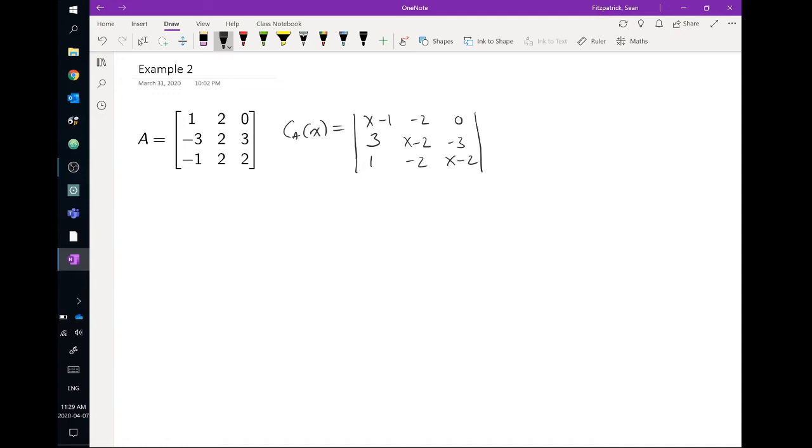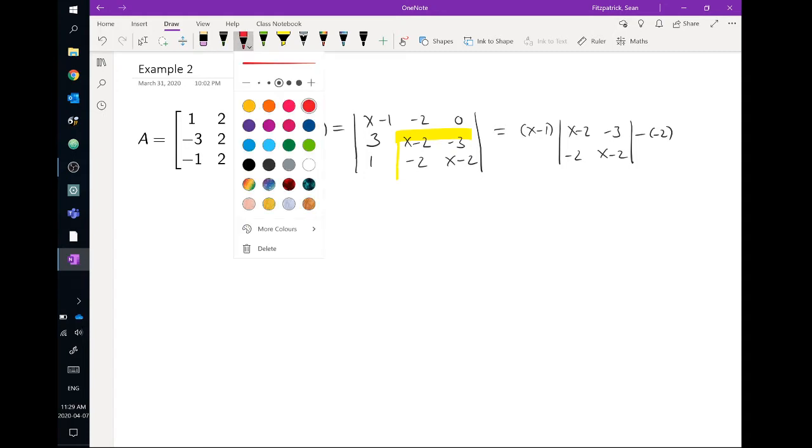Okay, so the next thing we want to do is we want to expand. Trying to use row operations to simplify usually doesn't get you very far because you've got those variables that you have to deal with and it's a bit of a pain. So what we'll do is we'll just expand along that first row because at least there's a 0. So x minus 1 times this 2 by 2 determinant: x minus 2, minus 3, minus 2, x minus 2, minus minus 2. Remember that in the middle we always put that minus sign in there. Across that first row our signs go plus, minus, plus always, okay?